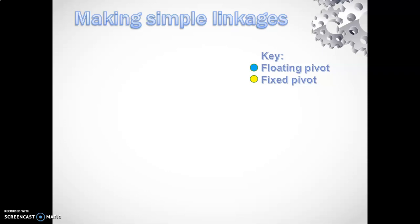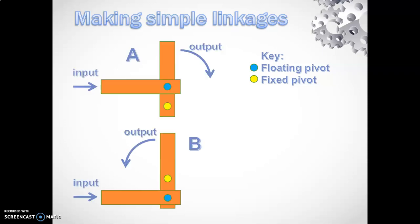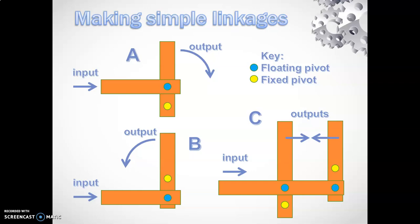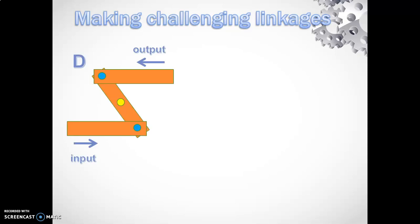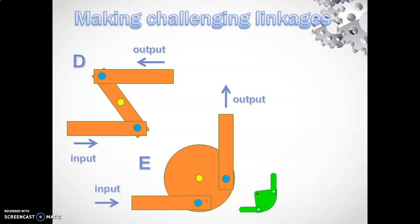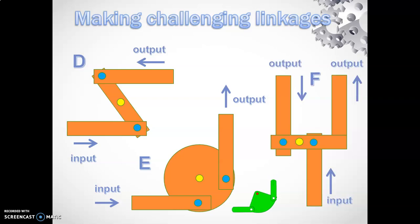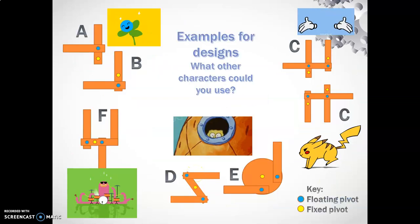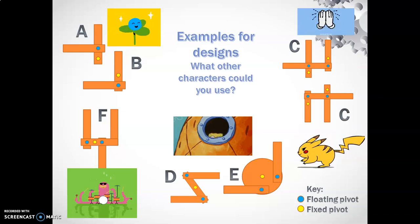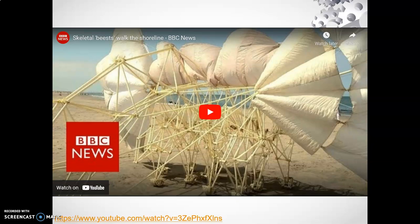Here are examples of simple linkages we can make in card. In example A, if we move the input inwards, it moves the output outwards. In B, the output moves inwards as well. You can combine the two together. For challenging linkages, you could make a reverse motion linkage or a bell crank. I have a short video for you about a Dutch engineer's amazing strand beasts - basically beach animals that come alive in the wind. Definitely worth a watch.